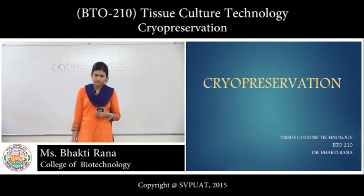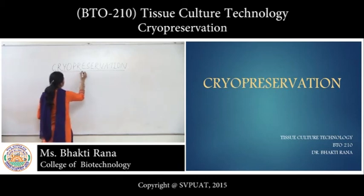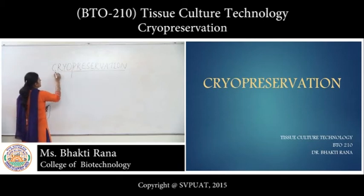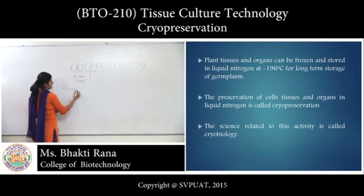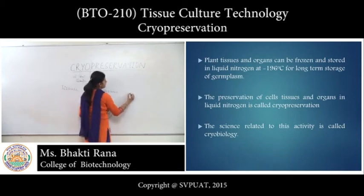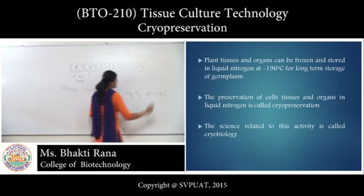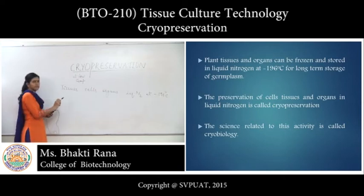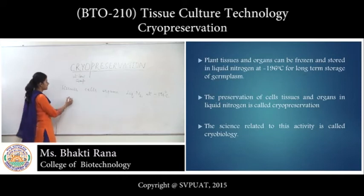Today's topic is cryopreservation. What do you mean by cryopreservation? It is 'cryo' and further it is 'preservation' — meaning you are preserving at low temperature. Tissues, cells and organs are preserved in liquid nitrogen at minus 190 degrees Celsius. This preservation of tissues, cells and organs in liquid nitrogen is known as cryopreservation, and the science pertaining to this activity is known as cryobiology.